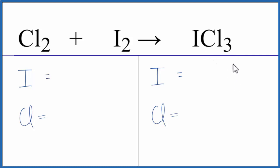Let's count the atoms on both sides and balance the equation. So I have two chlorine atoms here, two iodine atoms on the product side, just one iodine atom and three chlorine atoms.